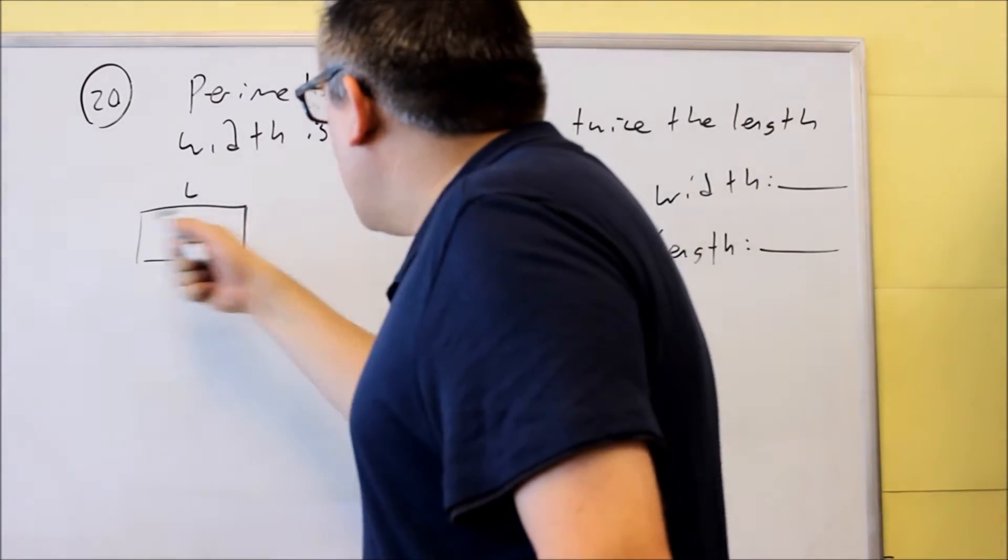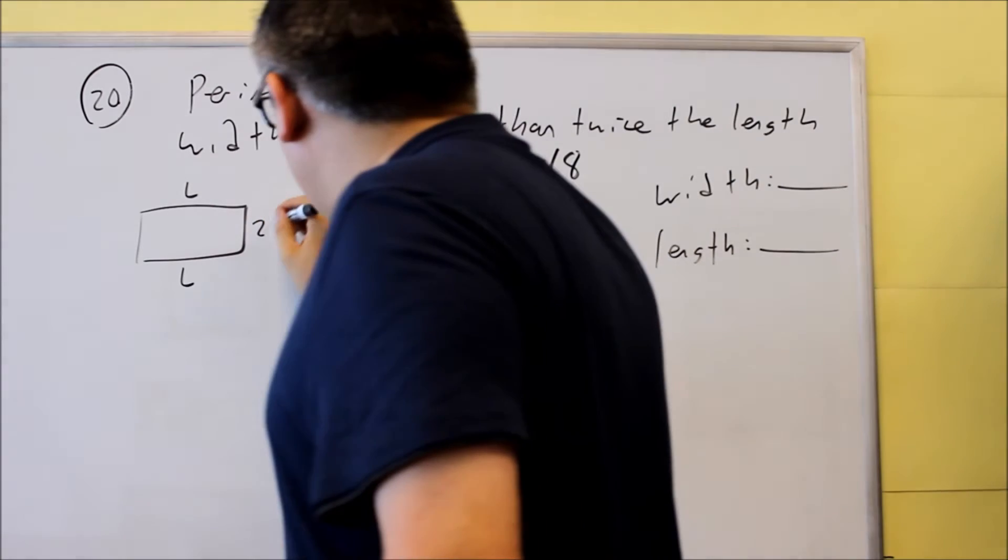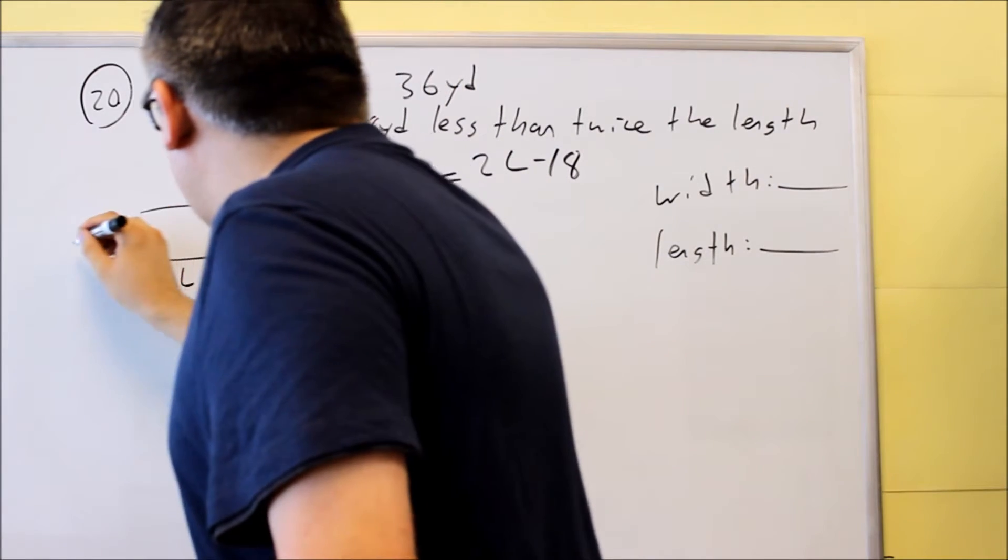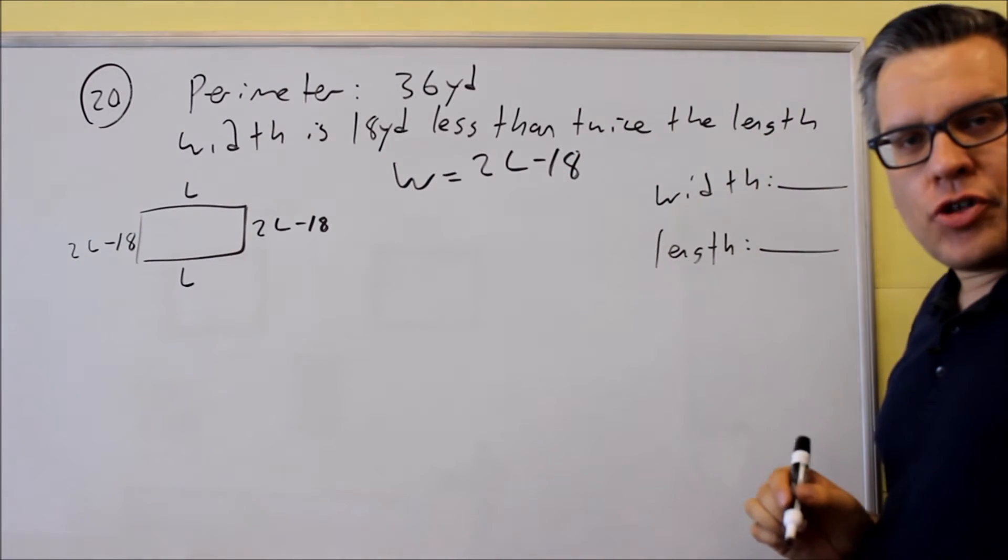Right here normally I would have W, but instead I'm going to put in 2L minus 18, because that way I have everything in terms of the same variable.